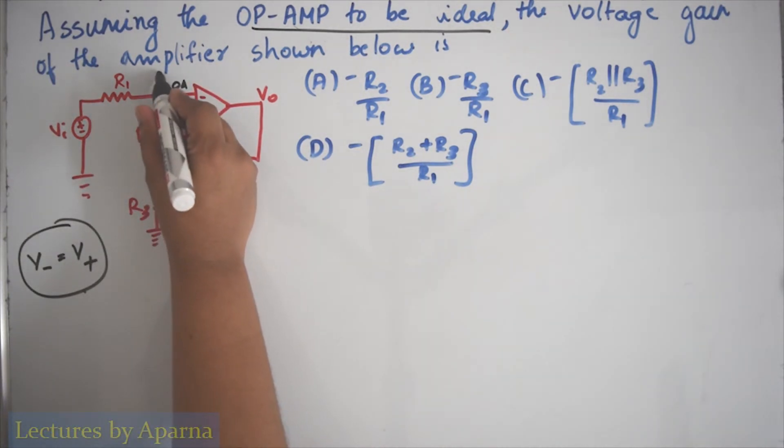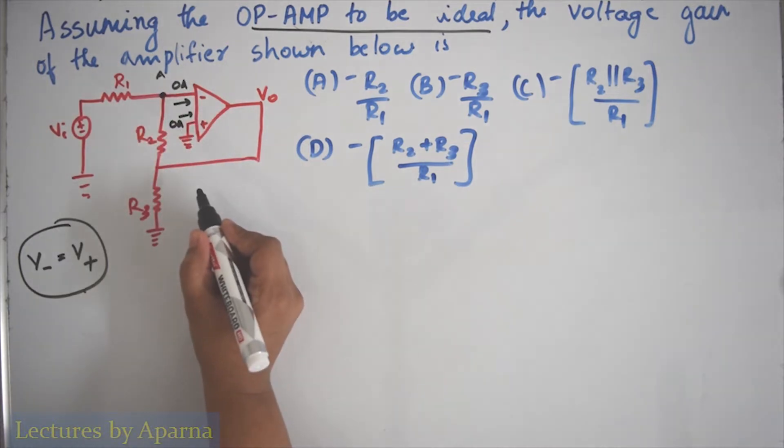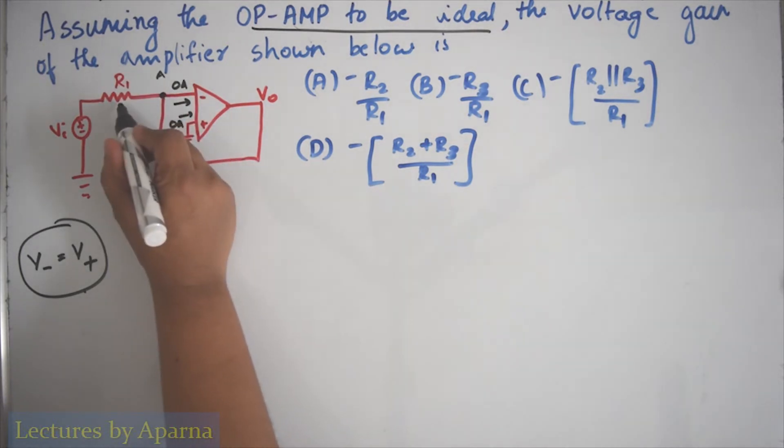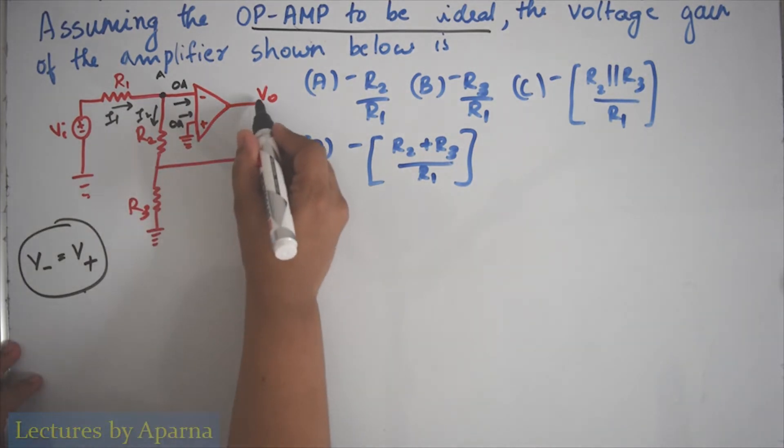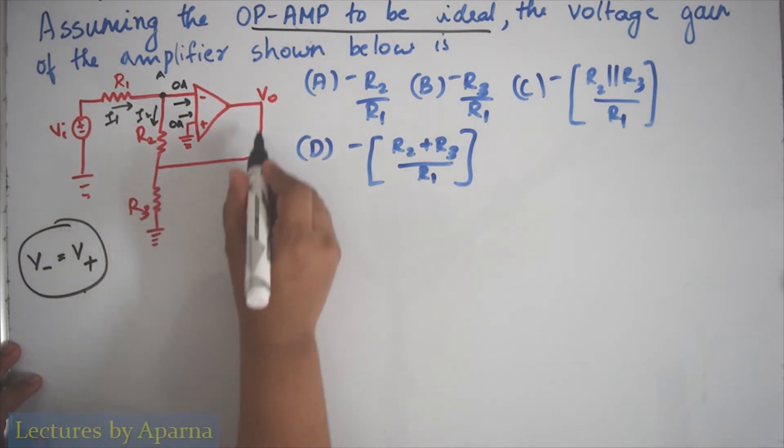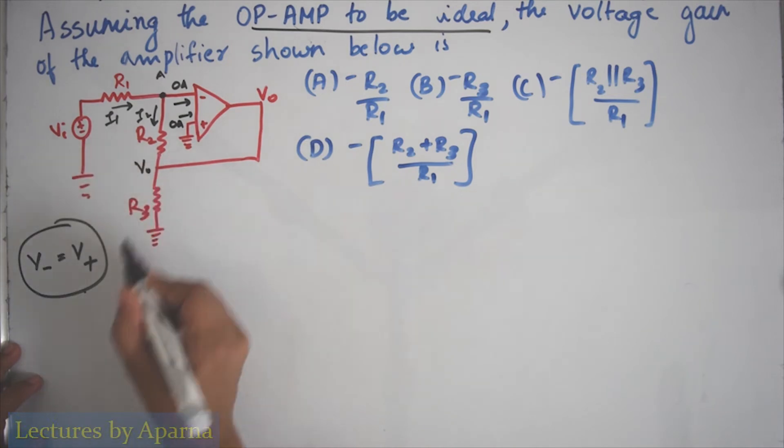Let's name this node as node A. Let the current entering this node be I1 and this current be I2. Since V0 is connected here and this is short-circuited, the voltage here will be V0.